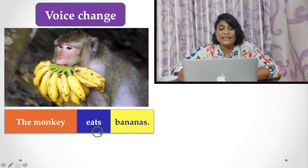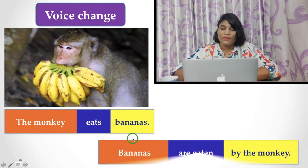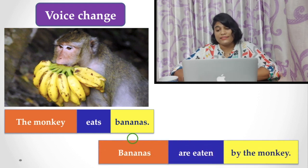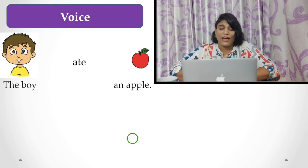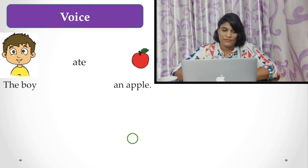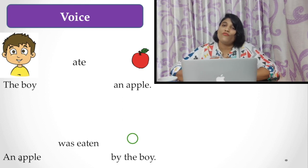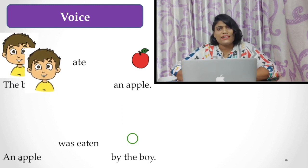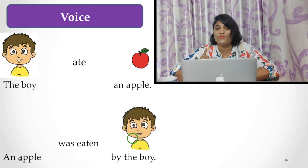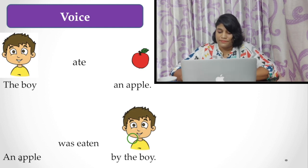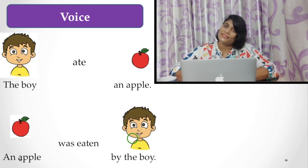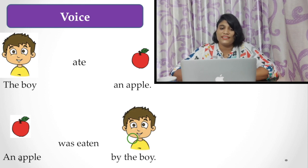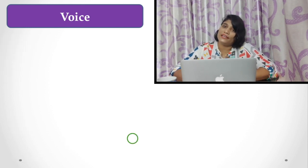The monkey eats bananas. Bananas are eaten by the monkey. In the second picture, you find the boy ate an apple. An apple was eaten by the boy. What is the difference in these two sentences? You find the subject 'boy' becomes the object in the second sentence, whereas the object 'apple' becomes the subject of the second sentence. This is the voice of English sentences.